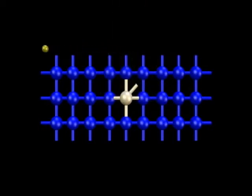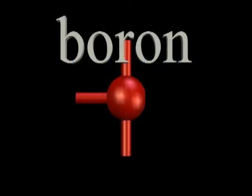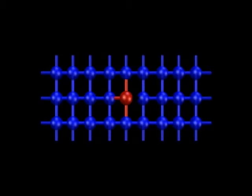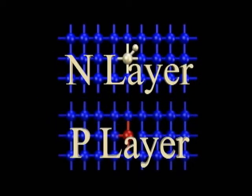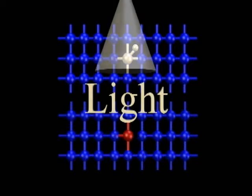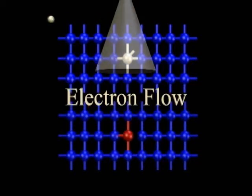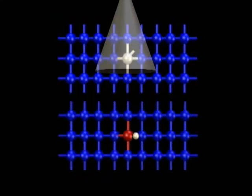Similarly, the positive, or P, layer is created when a boron atom with three valence electrons replaces a silicon atom. This leaves a positive hole and creates a positive layer that attracts electrons. In a complete solar cell, the N and P layers are sandwiched together. The movement of electrons in this configuration is complex, but basically light energizes electrons in the N layer, and they are attracted through a conductor to the positive P layer. This is electricity.